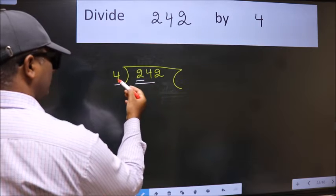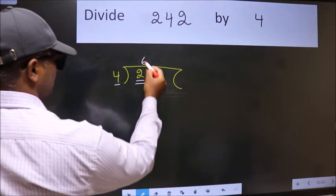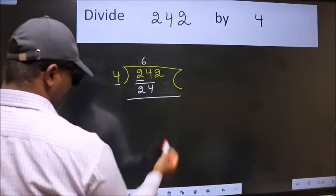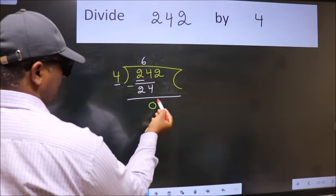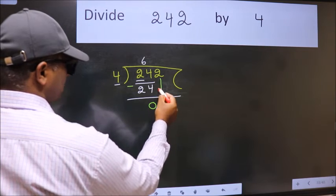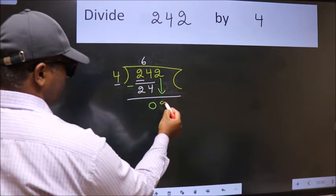When do we get 24 in the 4 table? 4, 6, 24. Now we should subtract. We get 0. After this, bring down the beside number. So 2 down.